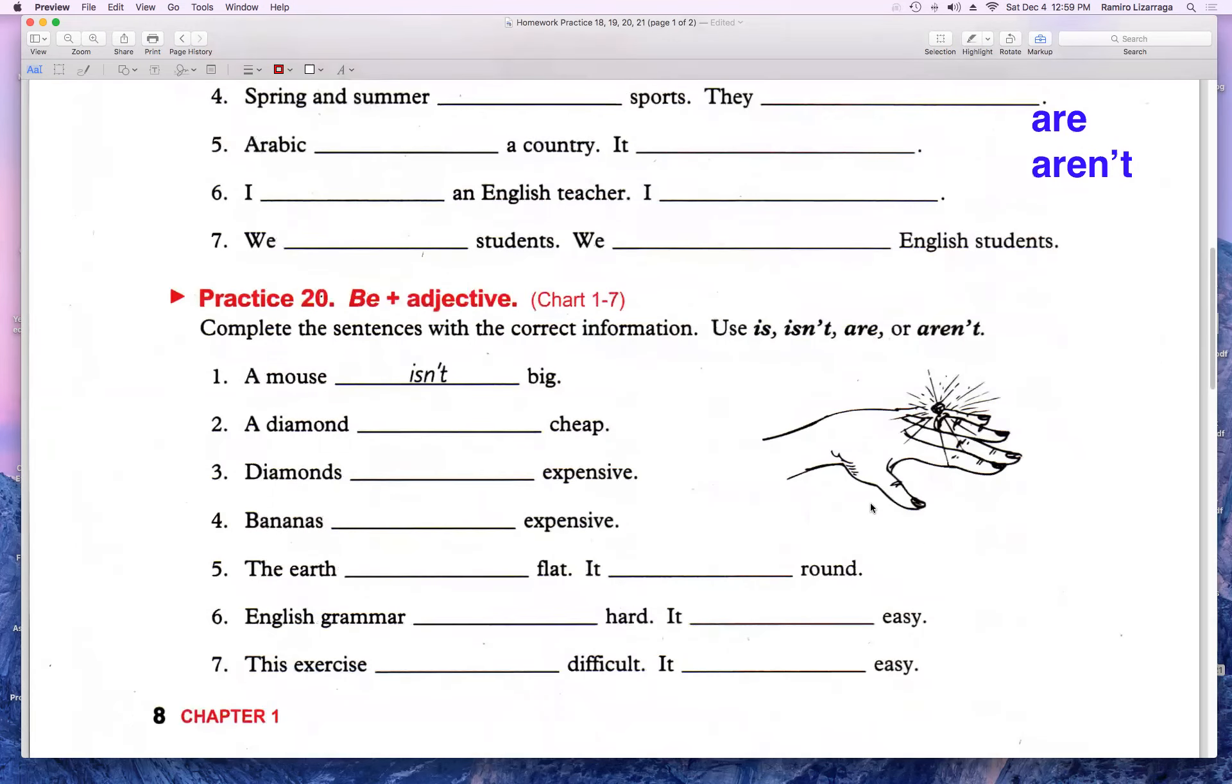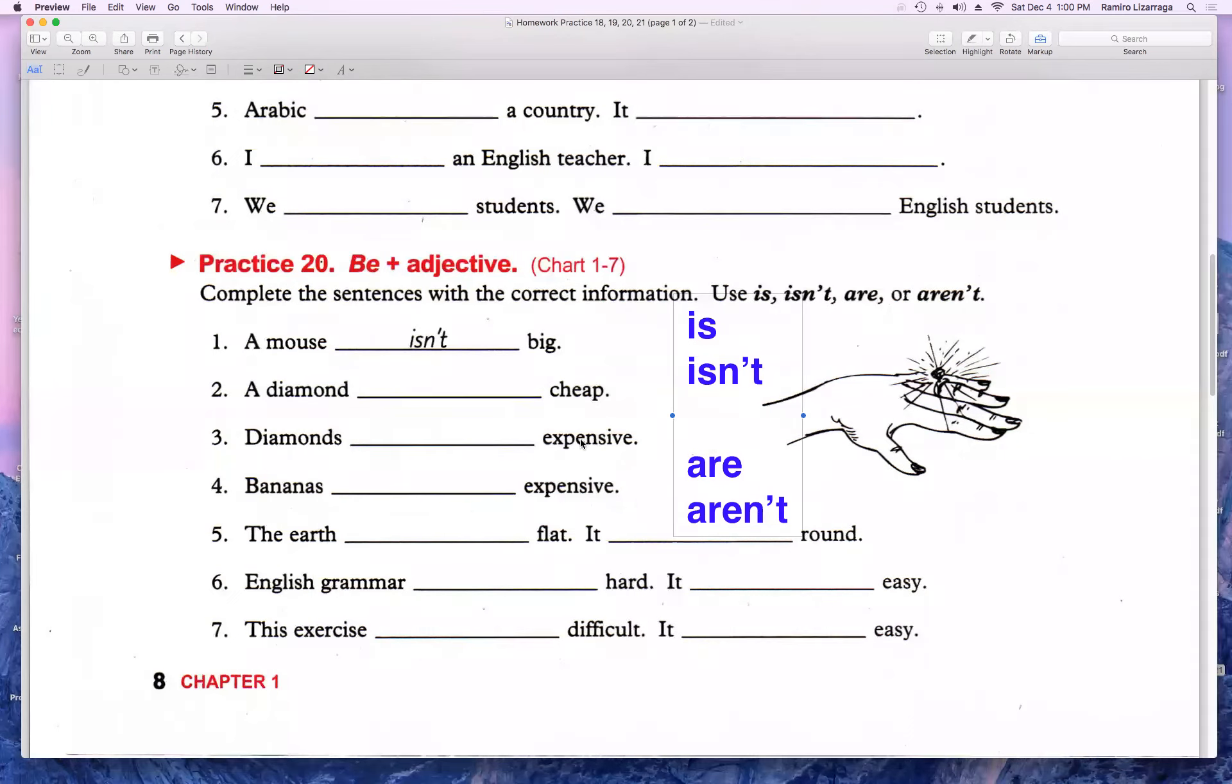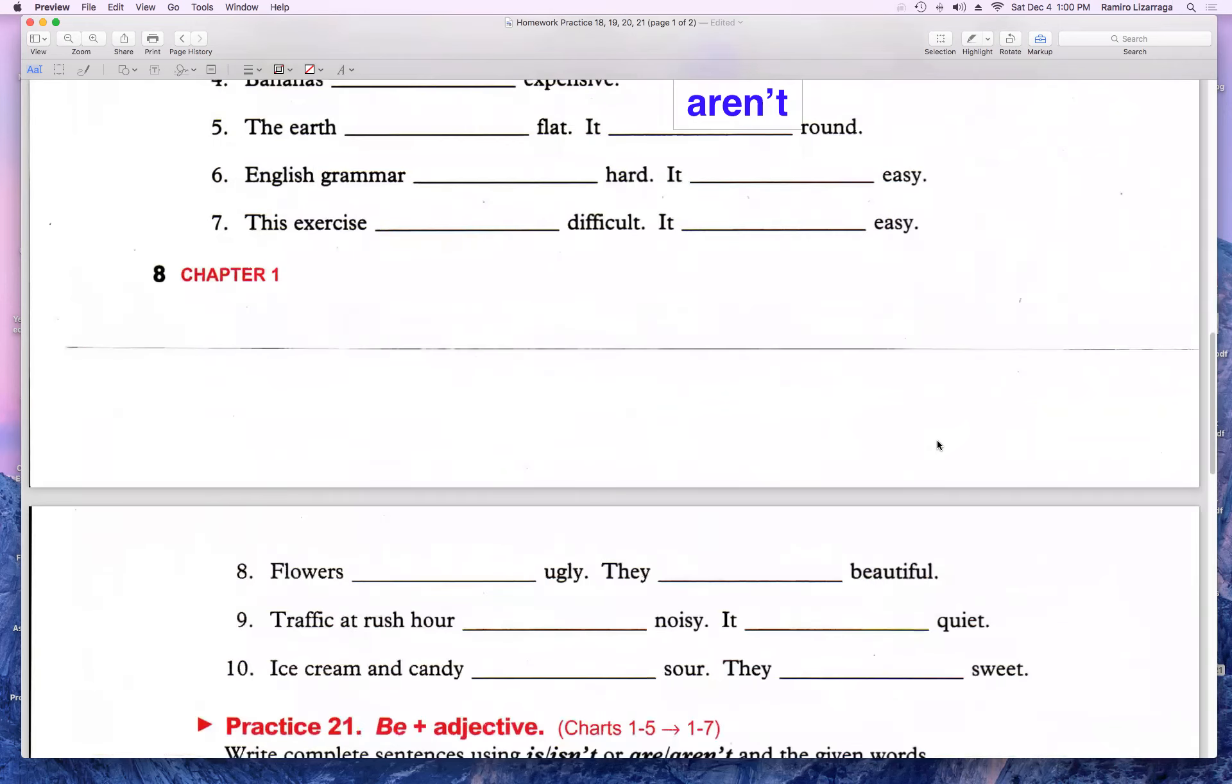En la 20, ¿qué van a hacer? Igual, nada más van a usar esto, una de estas opciones. Negar o afirmar. A ver, un diamante. Eso no es barato. Pues aquí dicen. O diamantes. ¿Son caros o no son caros? Pues aquí son caros. Un diamante no es. Aquí ustedes van a decir en la 2, un diamante no es barato. Los diamantes son caros. Aquí van a afirmar. En la 3 van a hacer una afirmación. Pero en la 2 van a hacer una negación. Tiene que tener lógica esa oración.